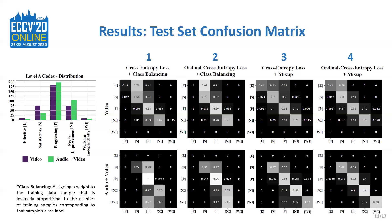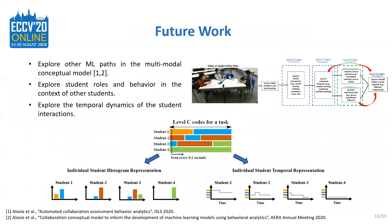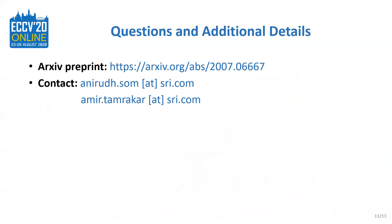The mix-up augmentation technique and the ordinal cross-entropy loss function complement each other and help get better test-set predictions. For future work, we plan to explore other paths described in the conceptual model and investigate how individual student roles and behaviors contribute towards the overall group collaboration quality, by computing separate histogram and temporal representations for each student in the group. You can find more details about our approach in the final ECCP proceedings or through our archived paper. For any questions, please feel free to contact us by email. Thank you.